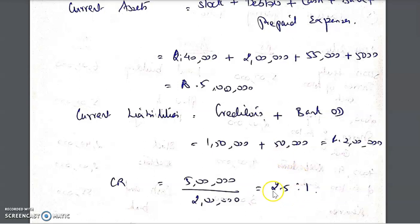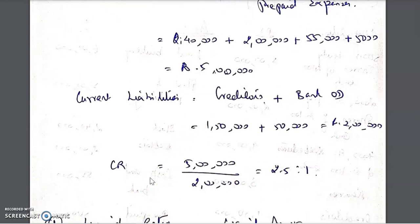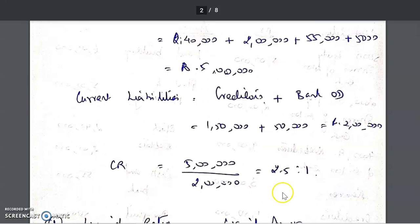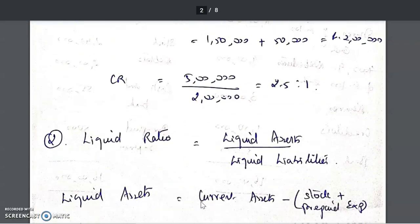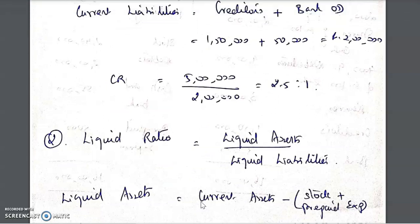The current ratio of 2.5 is to 1 means for every one rupee of liability, the company can pay 2.5 rupees — so they are in a very fair position. The current ratio tells about the solvency or ability of the company to meet their short-term commitments. You can mention the interpretation along with the ratio value.